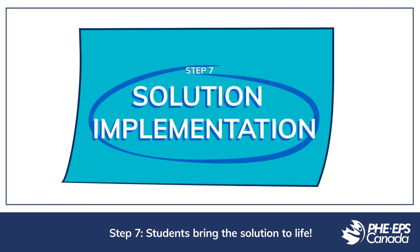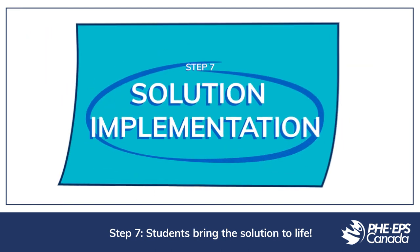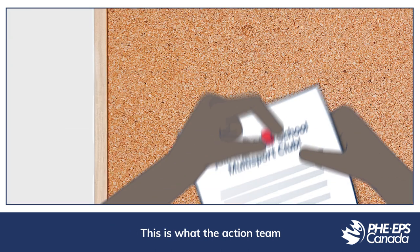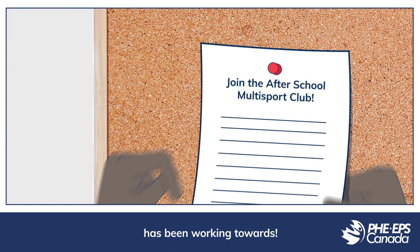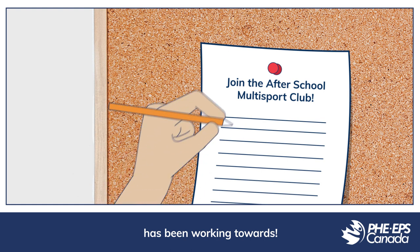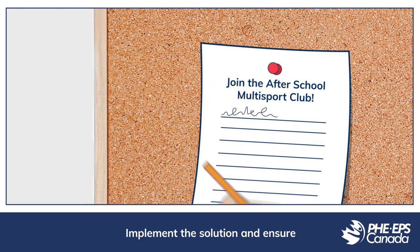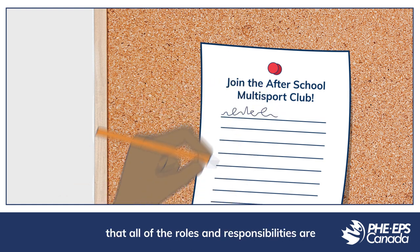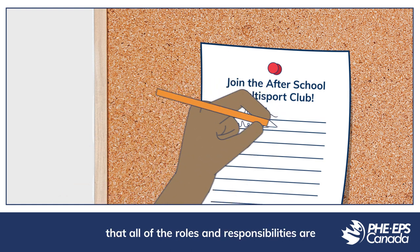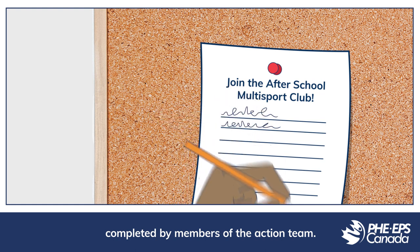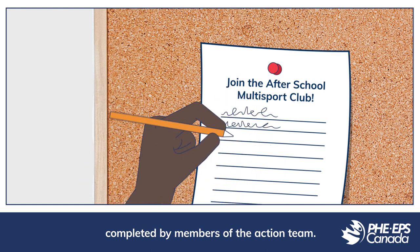Challenge the students to implement the solution they have designed. Students should collaborate to answer questions about how, when, where, and what they will need to implement the solution. Students then bring the solution to life — this is what the action team has been working towards. Implement the solution and ensure that all roles and responsibilities are completed by members of the action team.